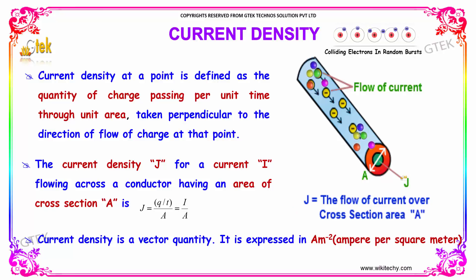Current density is a vector quantity and it is expressed as ampere per meter square.